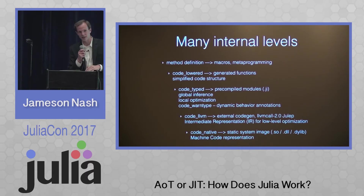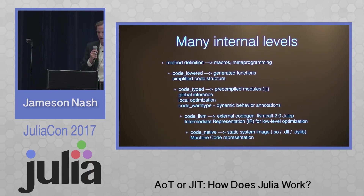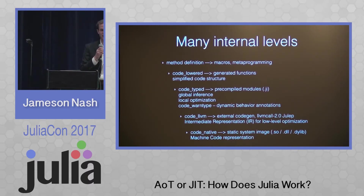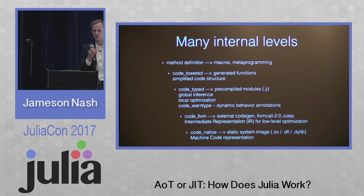If you try to start at the method definition and go right to code native, sometimes it's not very clear what transforms the compiler made. The first step is code lowered, which just simplifies the code structure — a very small transform, but it lets very expressive code turn into something simple so the compiler doesn't have to think about all these different constructs. Then we have generated functions, which let you plug in at that level, generating different code lowered every time you call it for a different set of argument types.